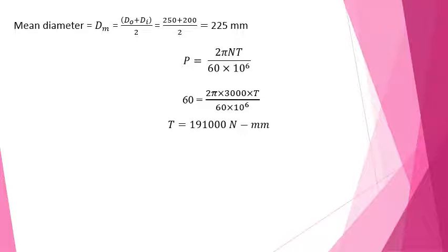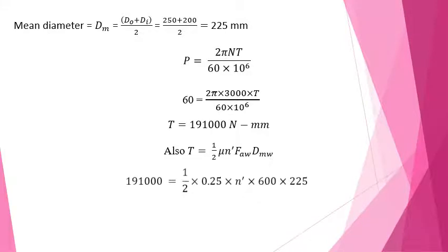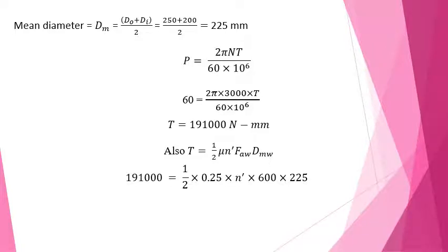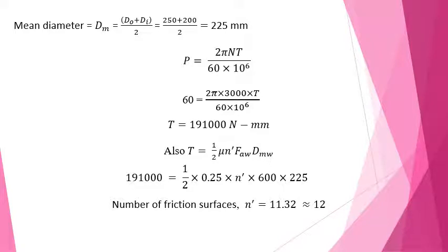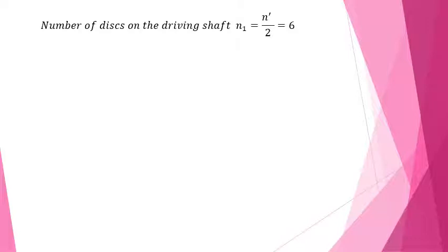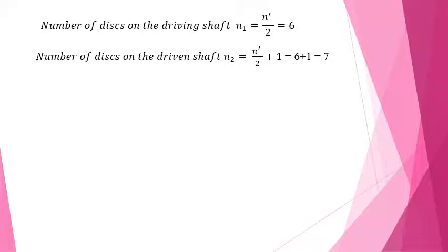Using P = 2πNT / (60 × 10⁶) and substituting 60 kW at 3000 rpm, the torque is 191,000 N·mm. Using the torque equation T = (1/2) × μ × n' × F_a × dm and substituting μ = 0.25, F_a = 600 N, and dm = 225 mm, the number of friction surfaces n' is found to be 11.32, which is rounded to 12. The number of plates on the driving shaft is n1 = 12 / 2 = 6, and on the driven shaft n2 = 6 + 1 = 7.